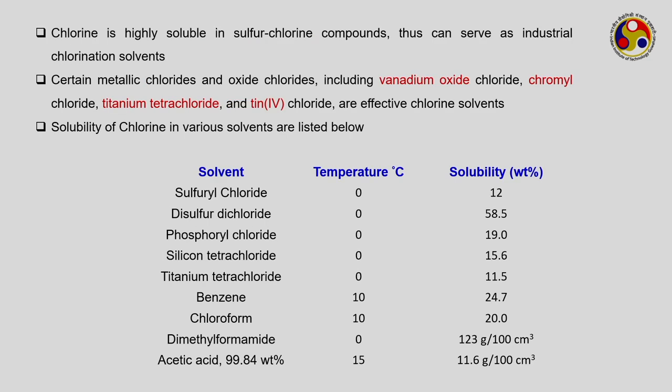Chlorine is highly soluble in sulphur-chlorine compounds, which are very useful in many industries and are called chlorination solvents. Certain metallic chlorides and oxide chlorides — including vanadium oxide chloride, chromyl chloride, titanium tetrachloride, and tin chloride — are effective chlorine solvents.